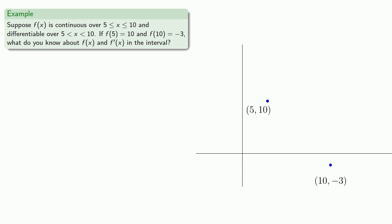So the mean value theorem is continuous and differentiable. So there's no cusps or corners, and it's an unbroken graph.